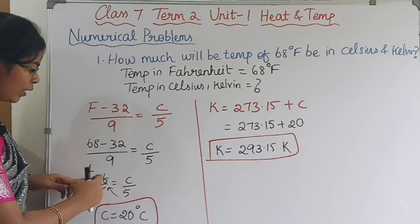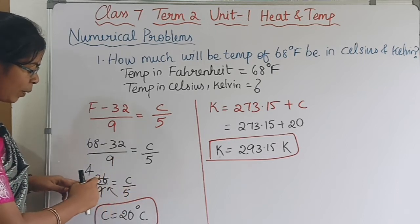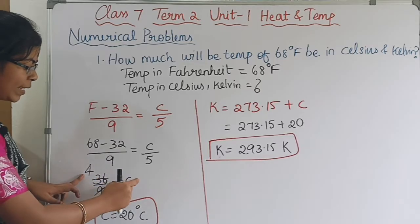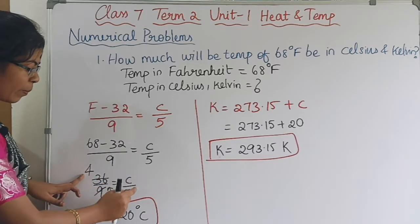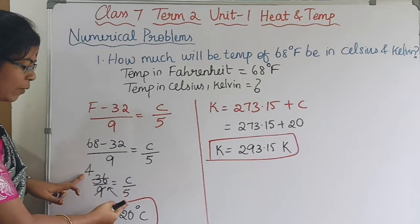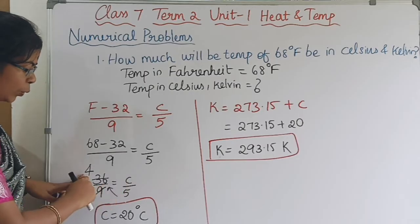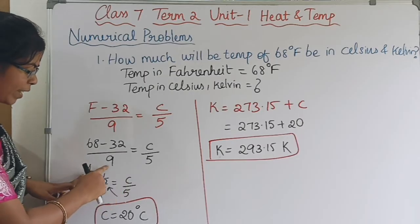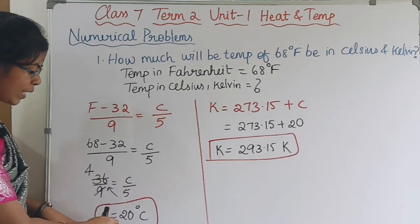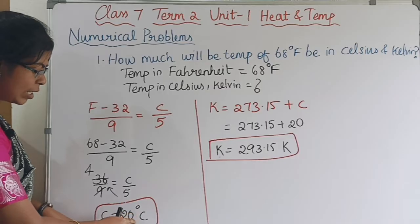Substituting F = 68: (68 - 32) = 36. So 36 / 9 = C / 5, which gives 4 = C / 5. Multiplying both sides by 5, we get C = 20 degrees Celsius.